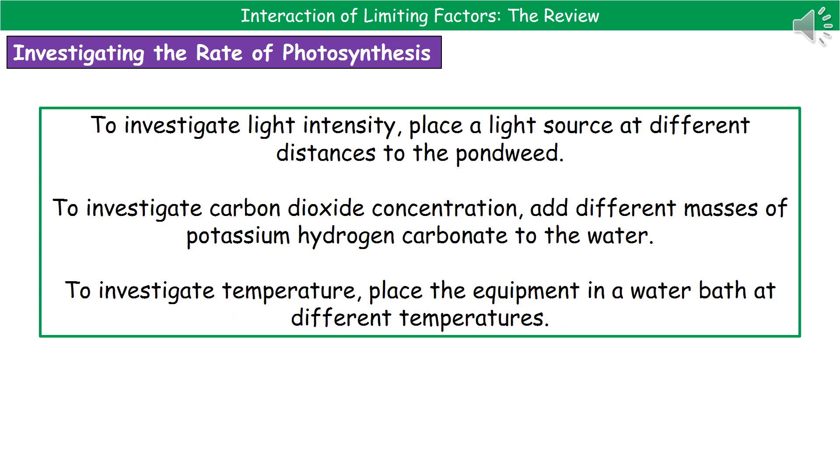One of the factors we could look at in terms of its effect on photosynthesis is light intensity. If you were asked to design an experiment to investigate how light intensity affects the rate of photosynthesis, all you'd need to do is place a light source or just something as simple as a lamp next to the pondweed first of all and then move it further and further away, recording the amount of gas made at each distance.